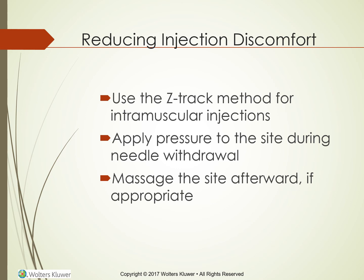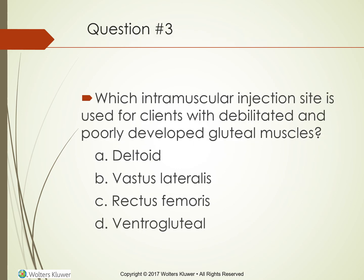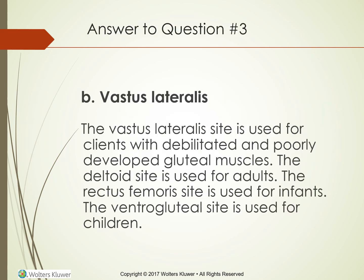To decrease discomfort, apply pressure to the site during needle withdrawal and massage the site afterward if appropriate. Which intramuscular injection site is used for clients with debilitated and poorly developed gluteal muscles? The answer is the vastus lateralis. The deltoid site is used for adults, the rectus femoris site for infants, and the ventrogluteal site for children.